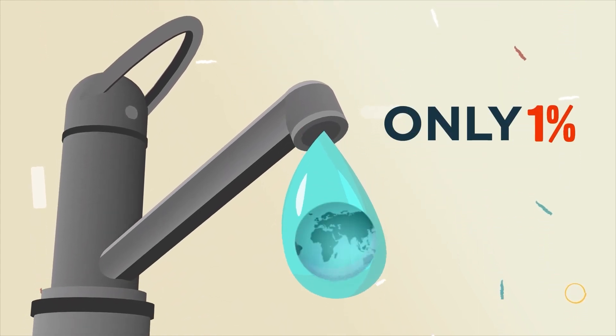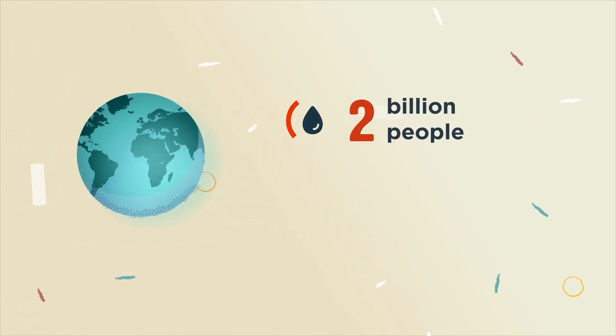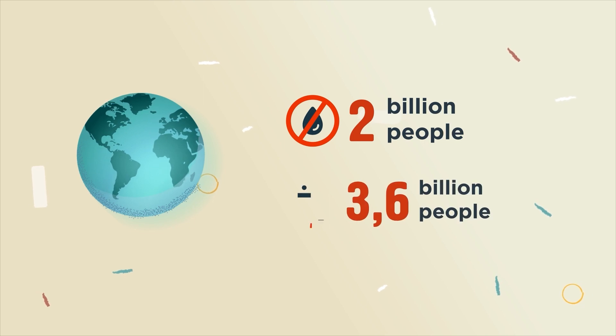With only one percent of Earth's water suitable for drinking, we are quickly overusing it. There are over 2 billion people without access to fresh water, and over 3.6 billion people with no access to sanitation.